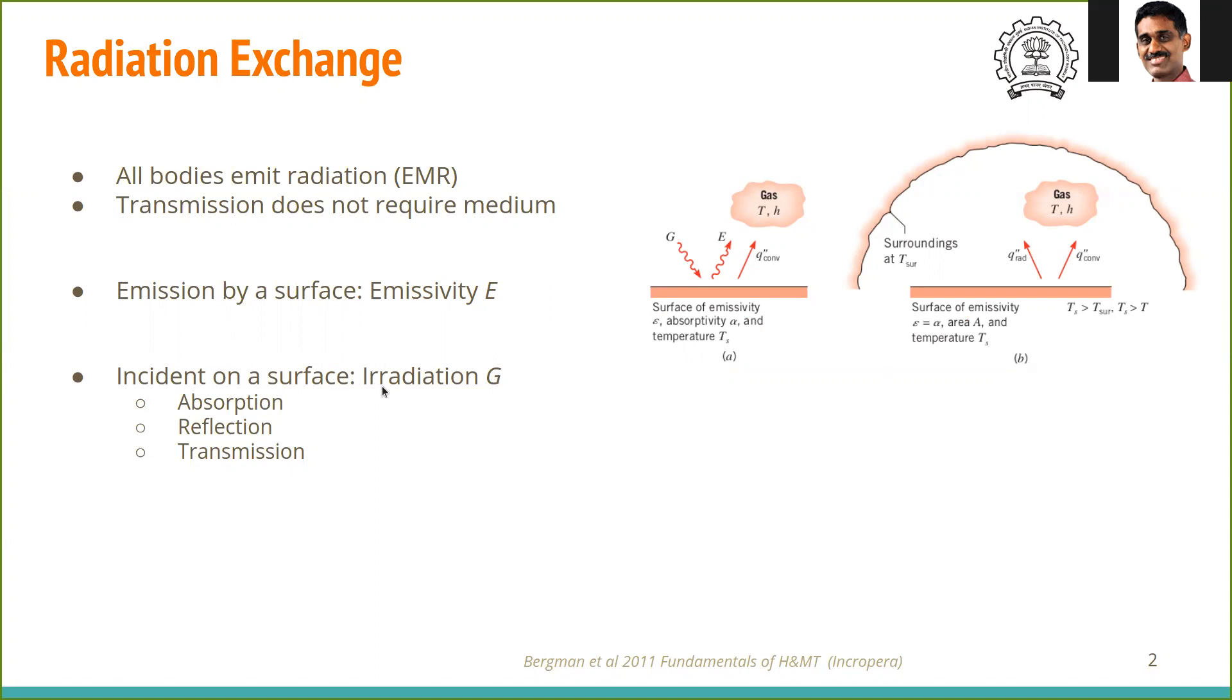The other concept we need to remember is the amount of radiation reaching a surface, called irradiation. So what reaches the surface is irradiation. What goes away from a surface or body is emissivity.